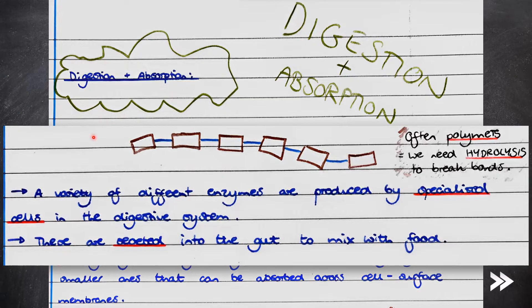It's a hydrolysis reaction because the large biological molecules in our food, such as proteins and starch, are polymers. If you remember from the beginning of the specification, the reaction that converts polymers into their smaller monomers is a hydrolysis reaction. To recap monomers and polymers, just follow the link in the top right.